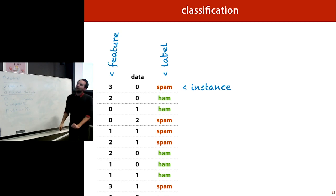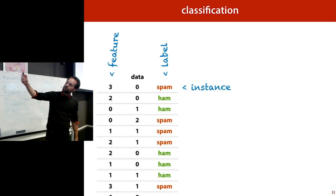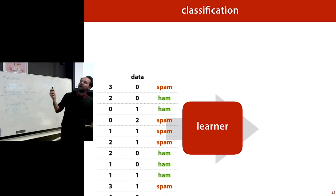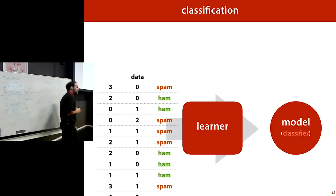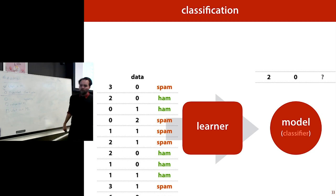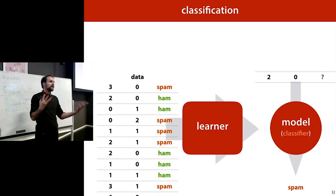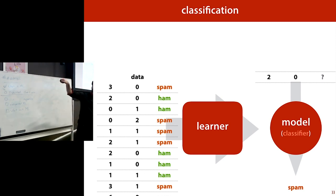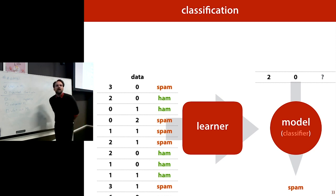We pass the dataset to a learner — we don't specify how it works, it's an interface — and it spits out a model, in this case called a classifier. The classifier takes a new unseen input for which we know the features but not the label, and provides the label. In this case it might predict spam. The job of the learner is to make the final model output the correct answer as often as possible.